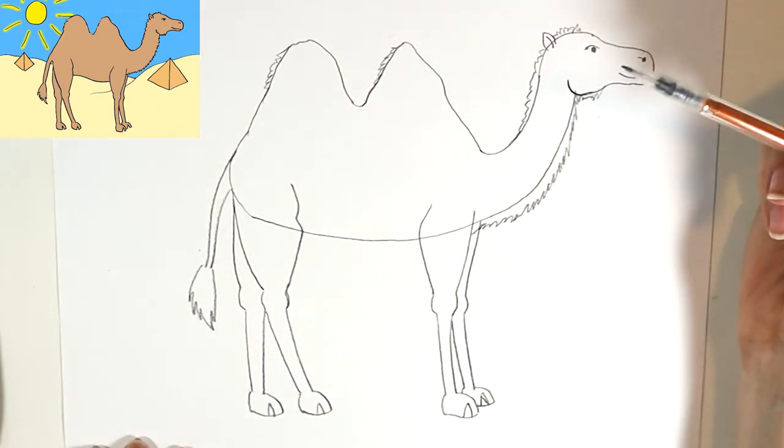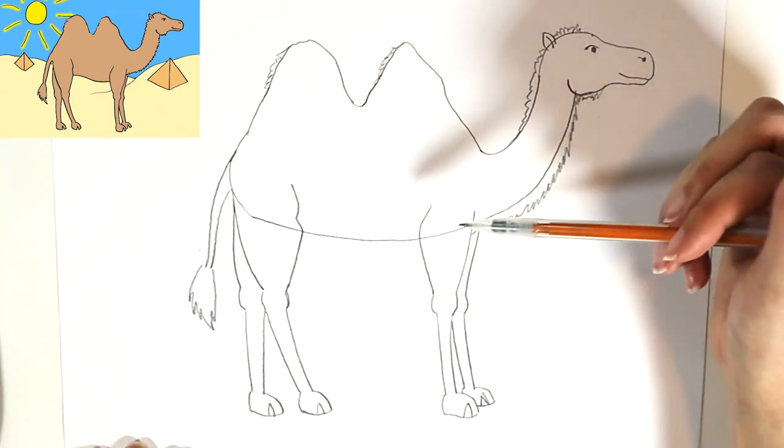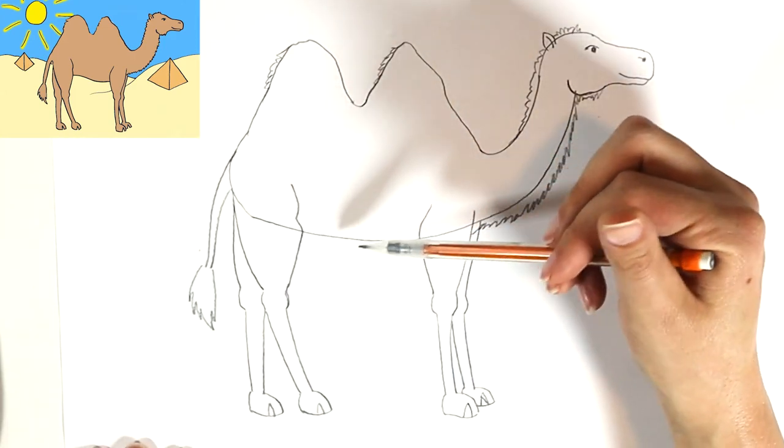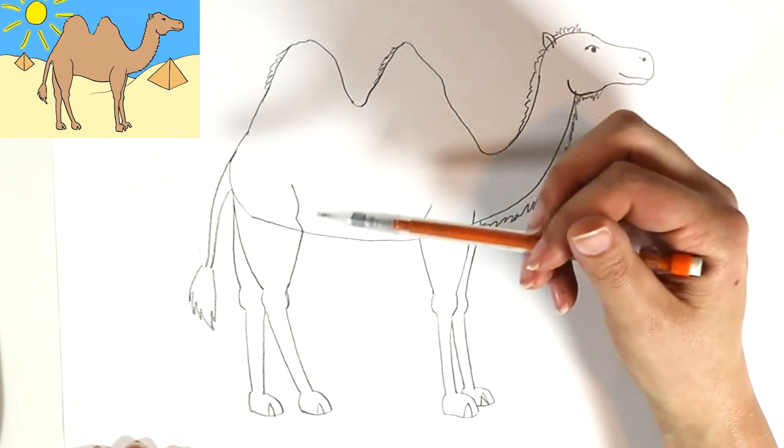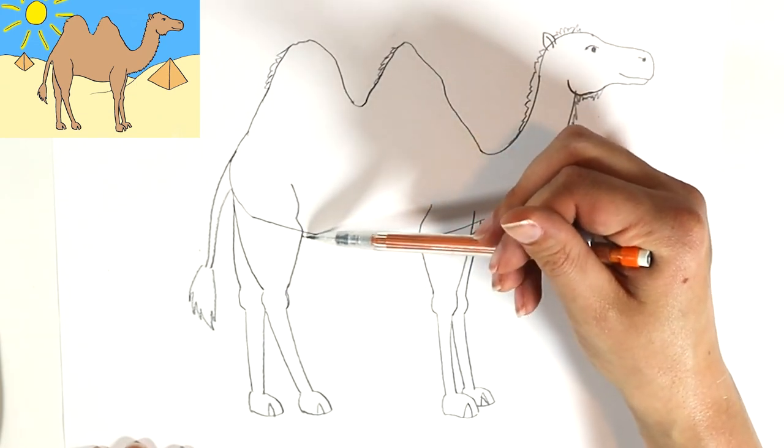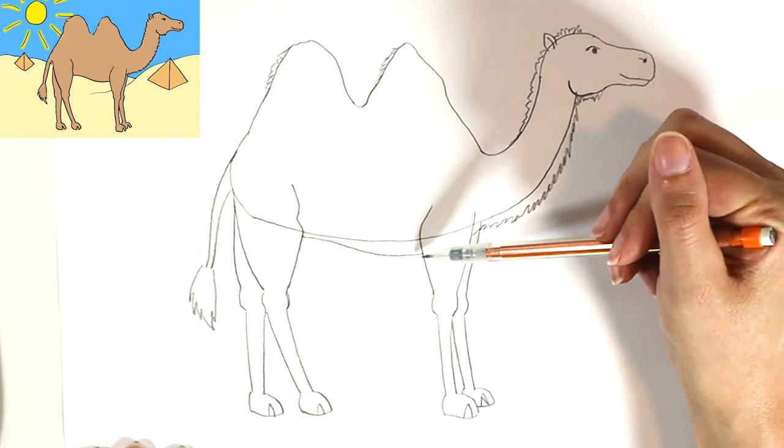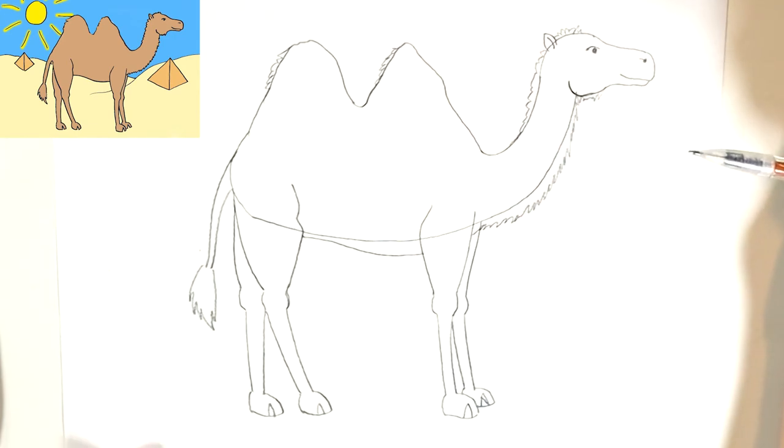And I guess the last thing before I do sharpie is like look at the belly. And if you feel like it's too small, like I actually kind of want mine to have a little rounder belly, so I'm actually gonna make it go out more. There we go.